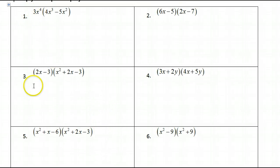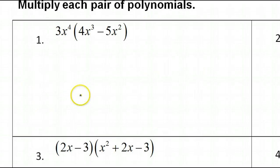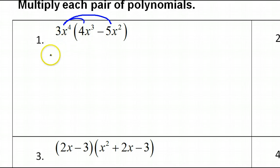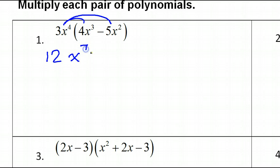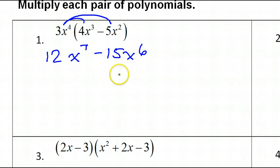I'm going to do problems 1, 3, and 5 in this video. For problem number 1, we're just doing the distributive property — we're going to multiply this through. So 3 times 4 is 12. X to the 4th times X to the 3rd is X to the 7th power. And then 3 times 5 gives negative 15X to the 6th power. So that's it for number 1.